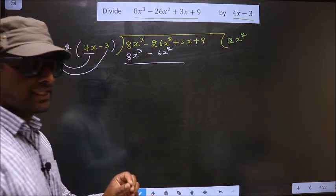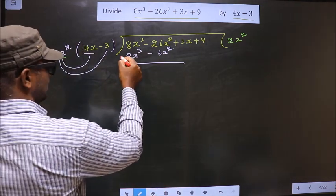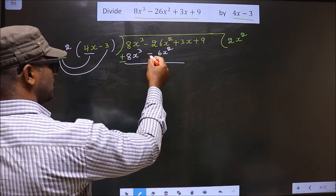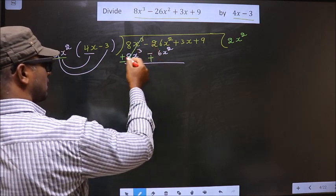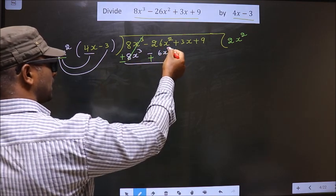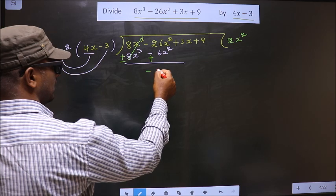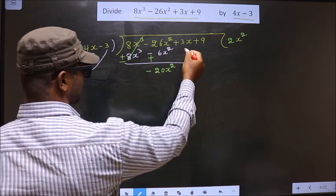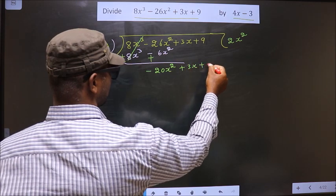Now we should change the signs. Here it is plus, you make it minus. Here it is minus, you make it plus. So these cancel out. Minus 26x² plus 6x² results in minus 20x², and we bring down plus 3x plus 9.